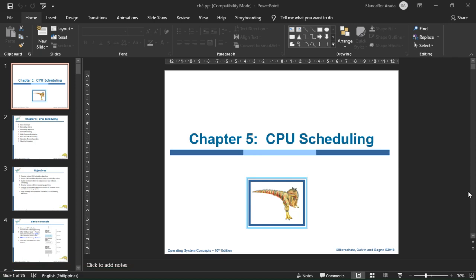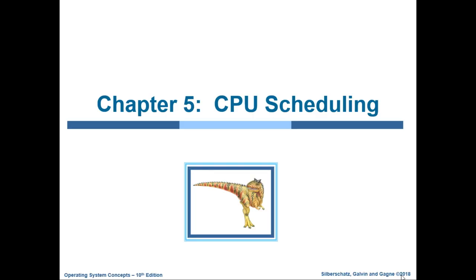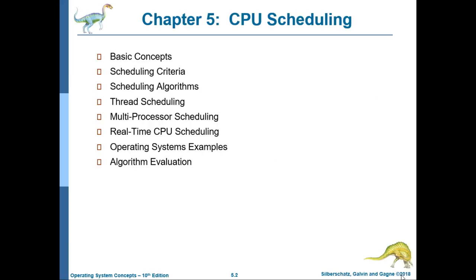Good day to all of you. We're already in Chapter 5, which is all about CPU scheduling. I hope that your brain cells are ready so that we can learn the different scheduling algorithms used in CPU scheduling. The contents of Chapter 5 are: basic concepts, scheduling criteria, scheduling algorithms, thread scheduling, multiprocessor scheduling, real-time CPU scheduling, operating systems examples, and algorithm evaluation.